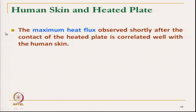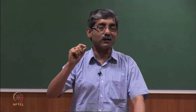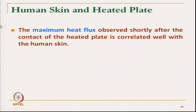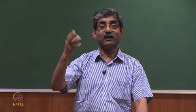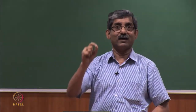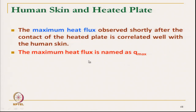The sensation is actually measured by maximum heat flux, Q max, which is observed shortly after contact of a heated plate correlated with human skin. A heated plate is kept at around 35 degrees Celsius — equivalent to human skin temperature — and when the fabric is touched with it, the instantaneous heat absorbed by the fabric is measured by a sensor. This instantaneous heat flow is called Q max, maximum heat flux, and is plotted against time.